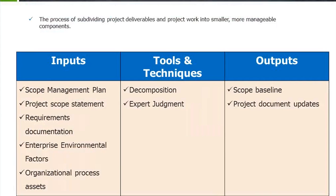The next step is to create the WBS — the work breakdown structure. The WBS provides the details of the complete project requirements and is broken down or decomposed to the lowest level, which is a work package. The inputs are the scope management plan, project scope, requirements document, and EEF and OPS. The tools and techniques are decomposition and expert judgment. The outputs are the scope baseline and project document updates.